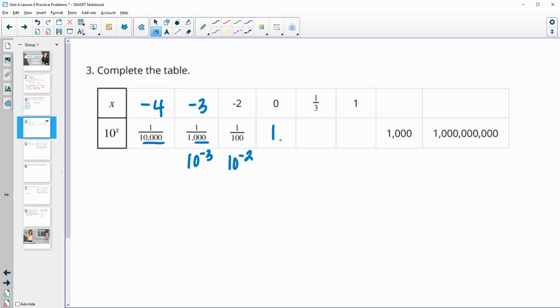10 to the zero power is one. 10 to the one third. So you could just write it like that, 10 to the one third. You also maybe would write it as a cube root of 10. 10 to the first is just 10. Here we have three zeros, and it's just 1,000. So this is going to be positive three. And then here we have three, six, nine zeros. So this is 10 to the ninth, meaning that our x would be nine.